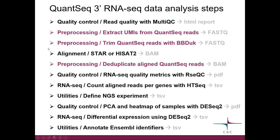In this slide, the usual steps of RNA-seq data analysis are shown in black, and we have a separate playlist explaining those in detail. In purple are the steps specific to QuantSeq 3' UMI data. First, you need to extract those UMIs; second, you need to trim reads for poly-A and adapters; and after alignment, you need to do the deduplication.